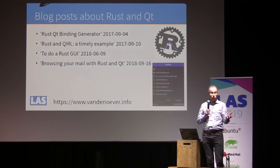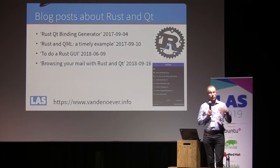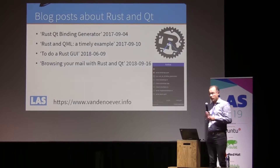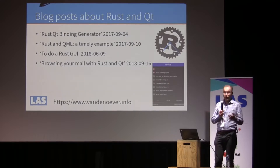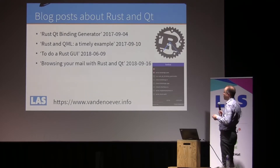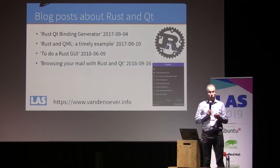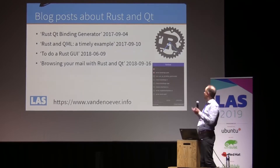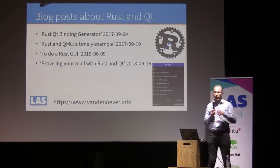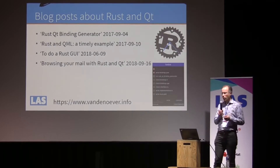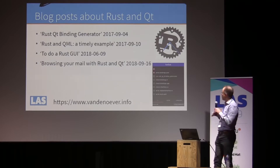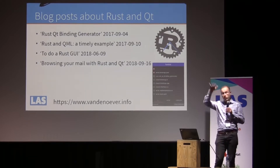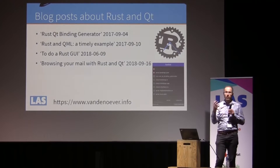To get some attention for my binding generator, I was writing blog posts. The first one just introduced the framework. The second one was a very simple example — Rust and QML — a timely example showing how to write a clock with ticking hands. That's kind of a tradition in KDE; it's the graphical Hello World of KDE. And the next one was how to do a to-do list in Rust, which was just a list of items — still a fairly simple user interface.